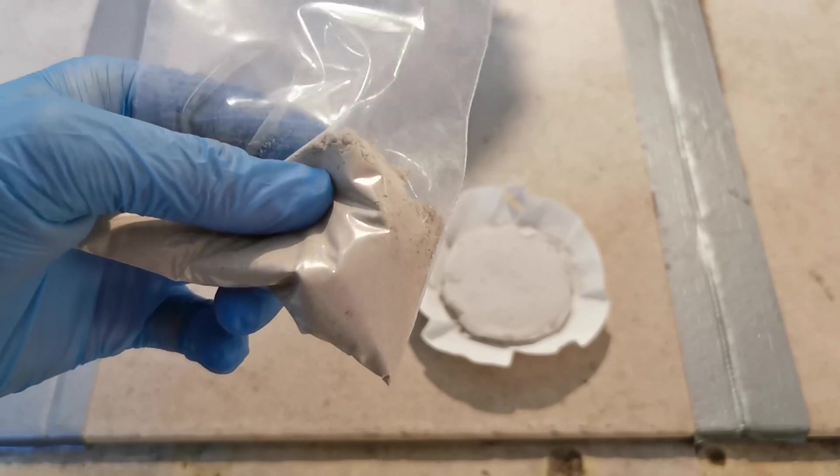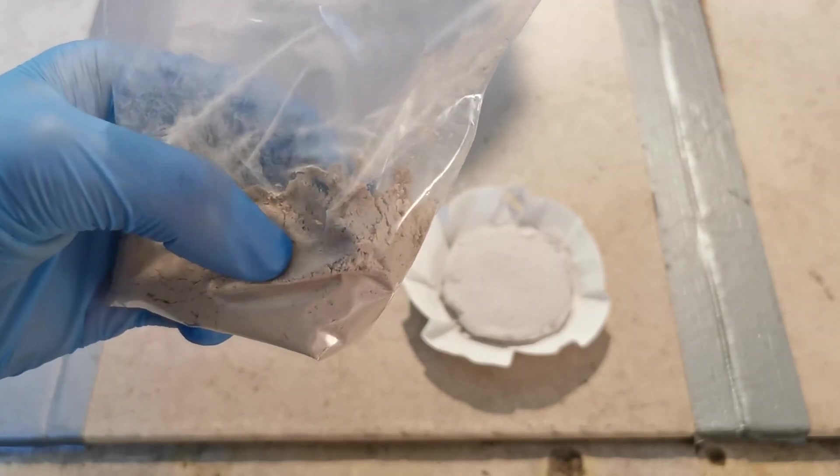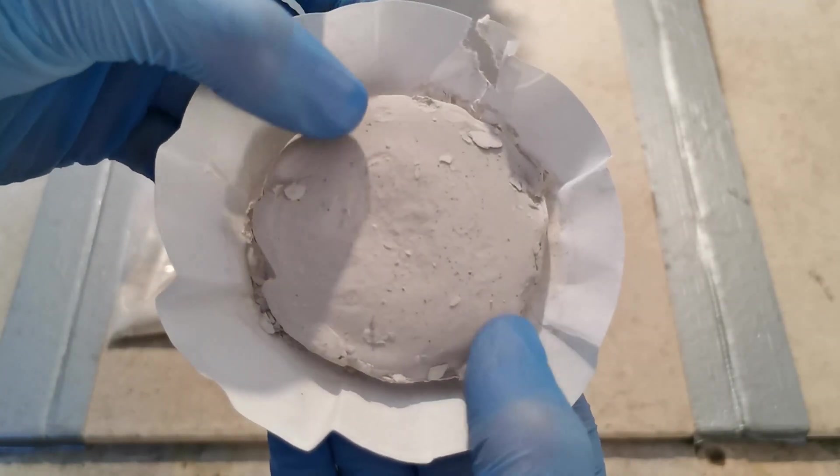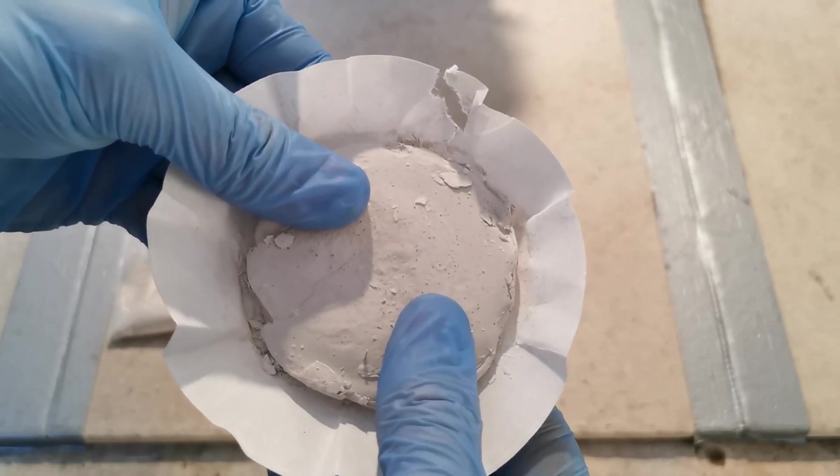We have to get rid of any soluble stuff beforehand, so that it doesn't get leached out along with the barium later. If your barium sulfate is clean enough, you can skip the following steps.